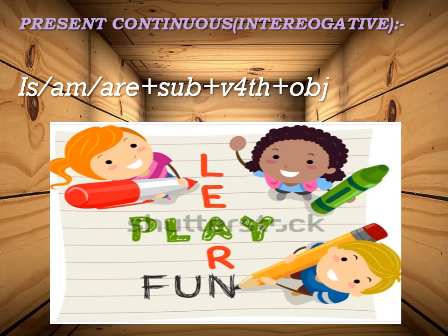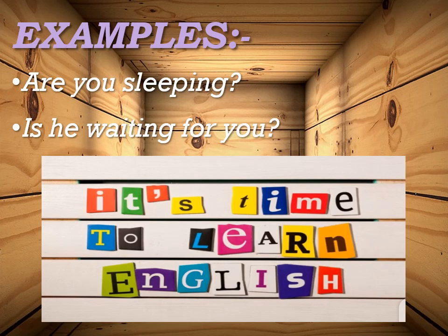Ab is tense ke according is/am/are helping verb ka step use hoga, aur fourth form hum already use kar rahe hain tense mein. Look at these examples. Are you sleeping? — Kya tum so rahe ho? You subject hai yahan par, toh uske according are use kiya hai. Is he waiting for you? — Kya woh tumhara intizaar kar raha hai? Yahan subject he hai, toh uske according humne is use kiya hai aur ing form use ki hai.